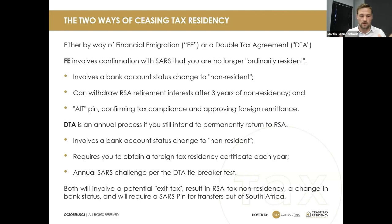The first thing they look at in the tiebreaker test is where you have a permanent home available. For example, if we use the UAE as a jurisdiction with a DTA, if you have a permanent home available there and you don't have one in South Africa — you've sold everything — then you would be seen as a non-resident for that year of assessment. It's an annual challenge based on personal circumstances.